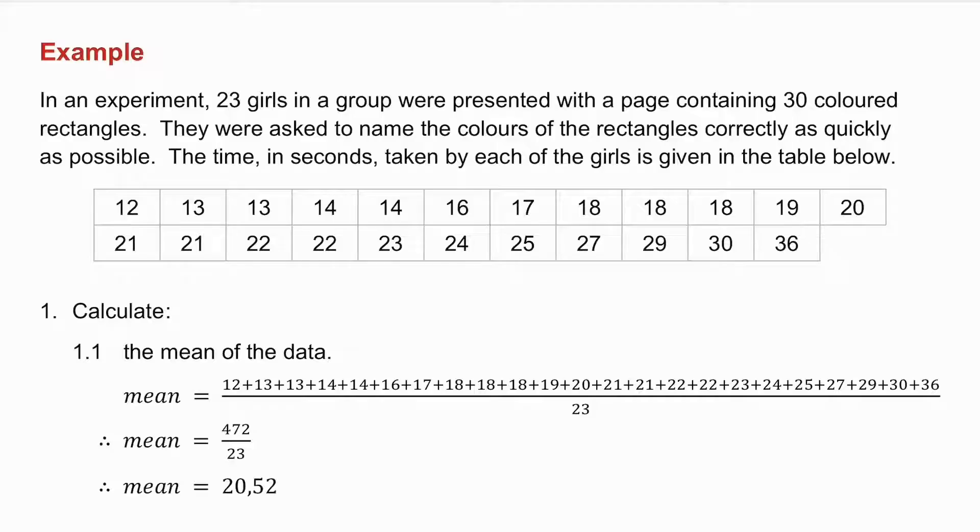Number one asks you to find the mean of the data. Well, to get the mean of the data, you add everything up and you divide by 23 because there are 23 numbers in the set of data. And there you get the mean.